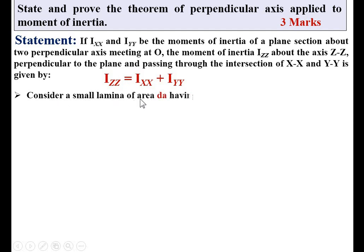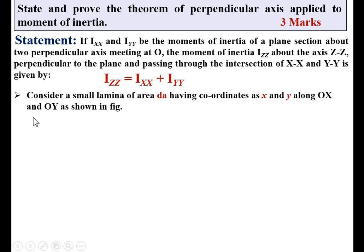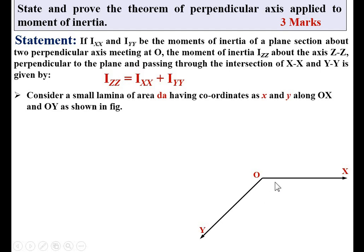Consider a small lamina of area dA having coordinates x and y along OX and OY as shown in the figure. This is the OX, that means the XX axis, and this is OY, means the YY axis, and their intersection is O, the origin point. OX and OY are perpendicular to each other — that means this angle is 90 degrees. Now consider this very small elemental lamina having area dA, meaning a very small area, and having coordinates x and y.